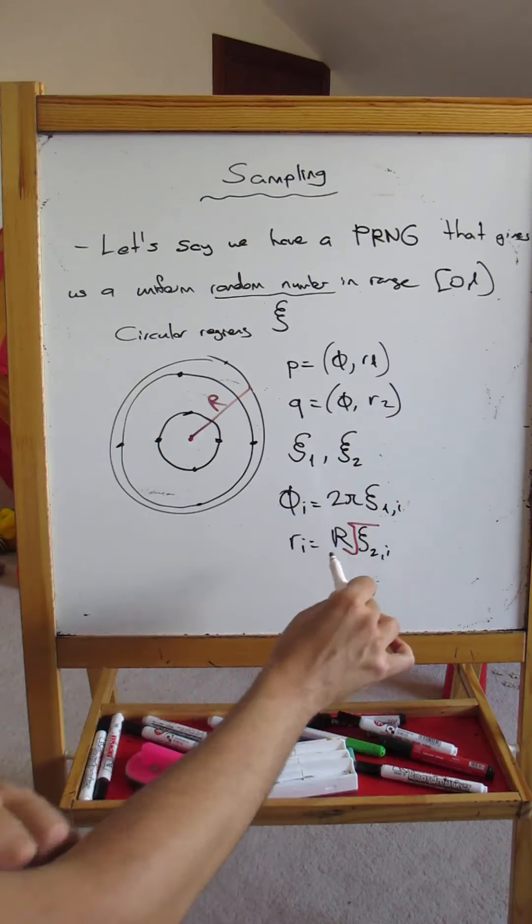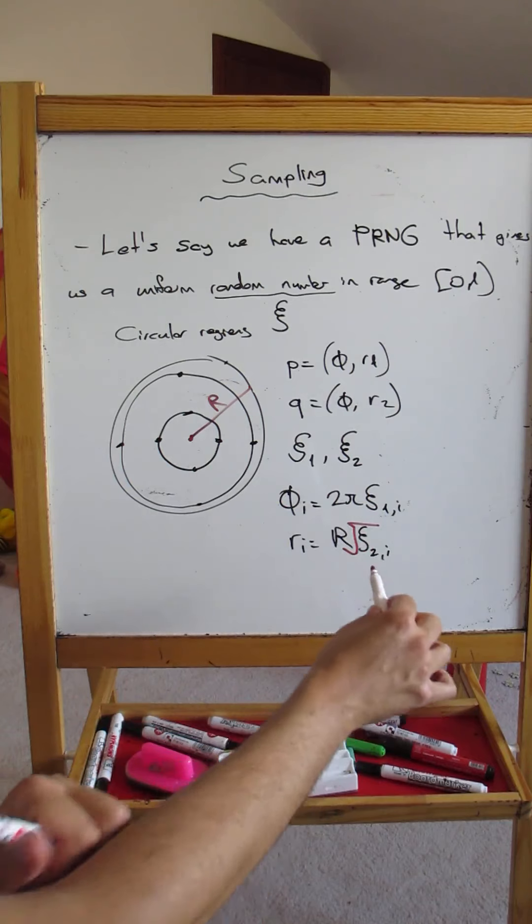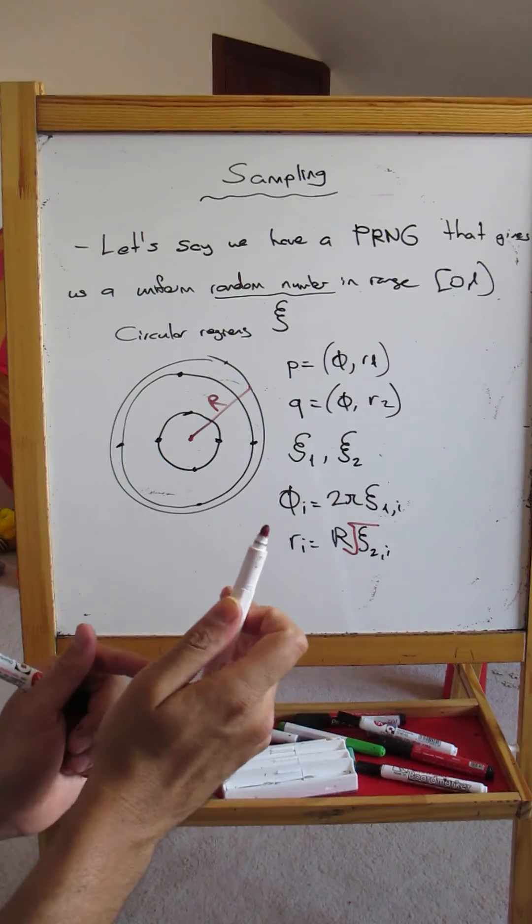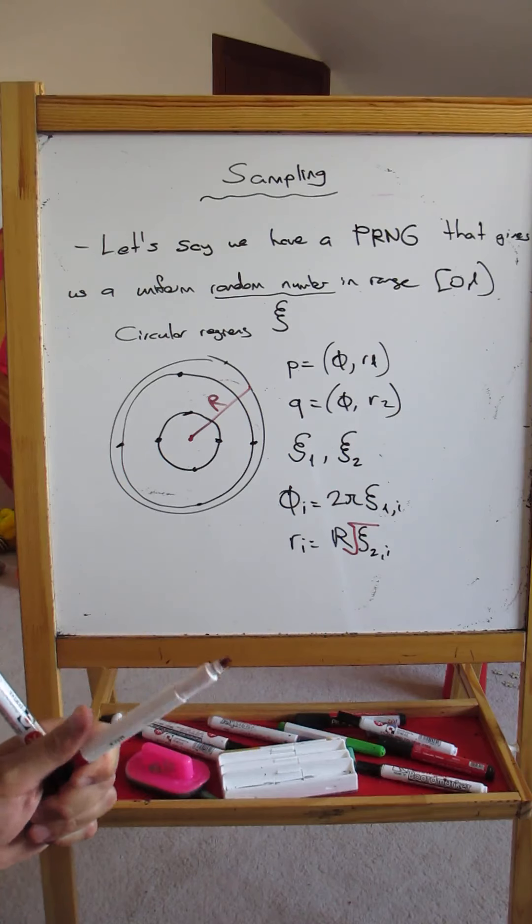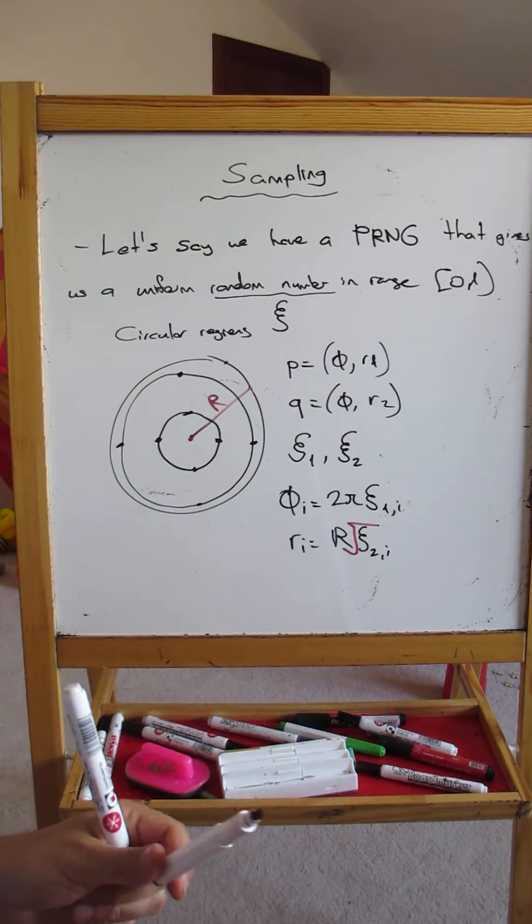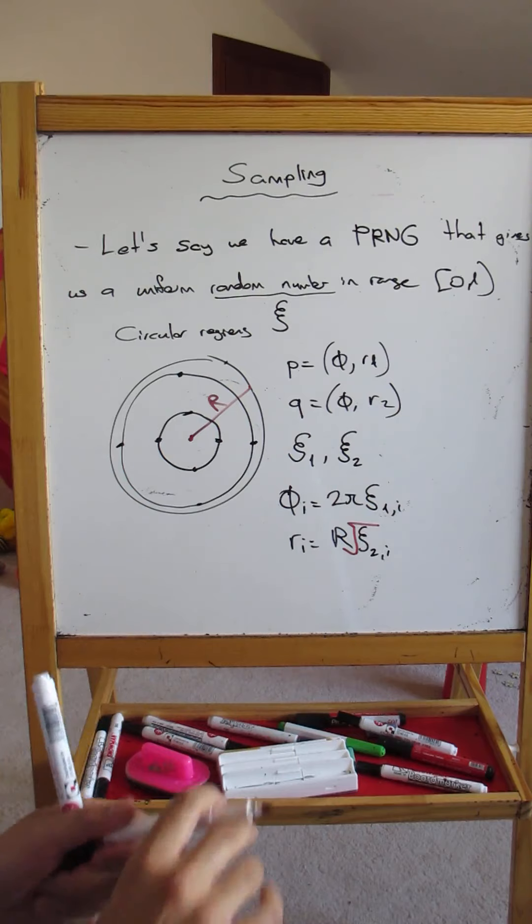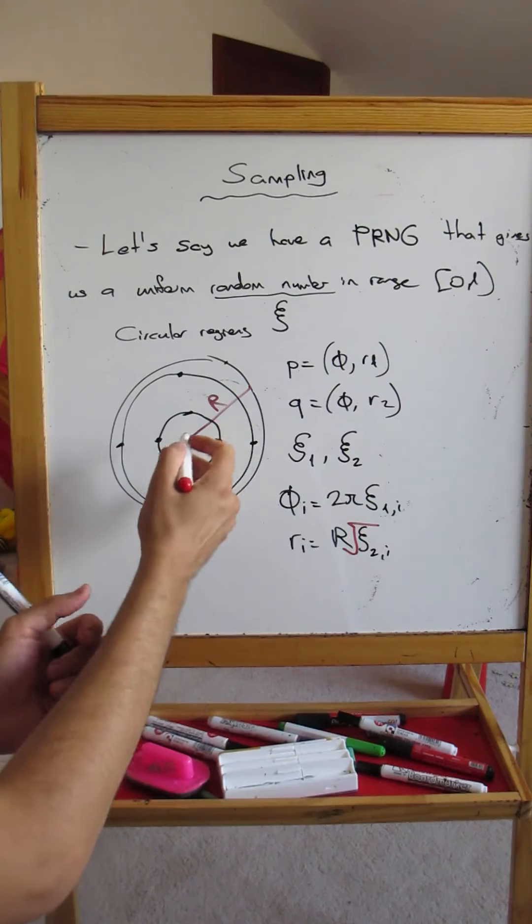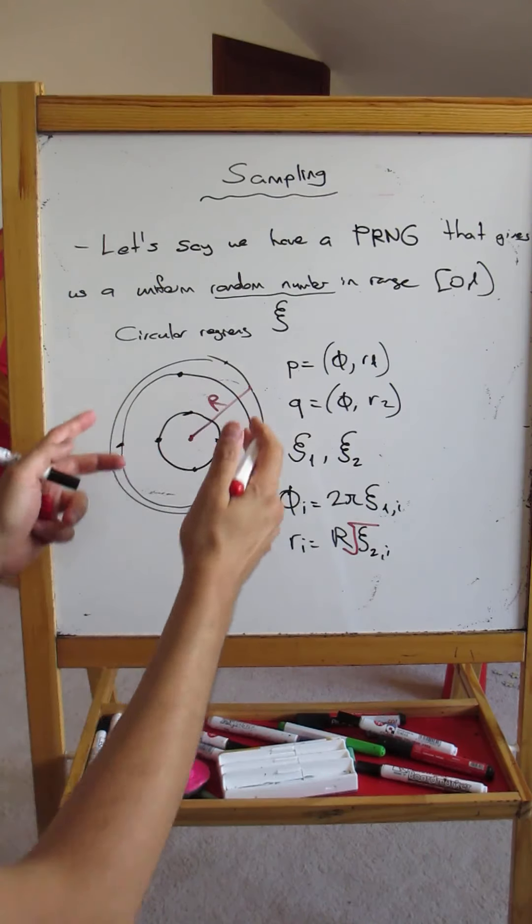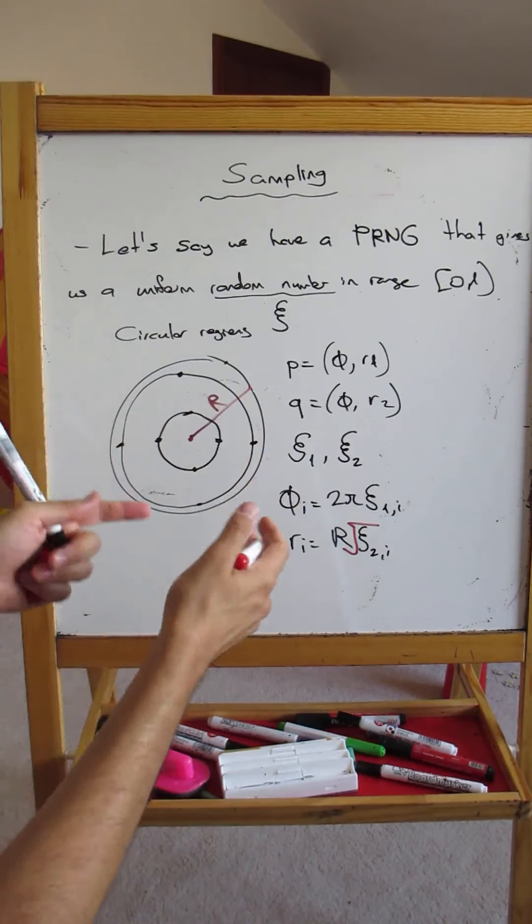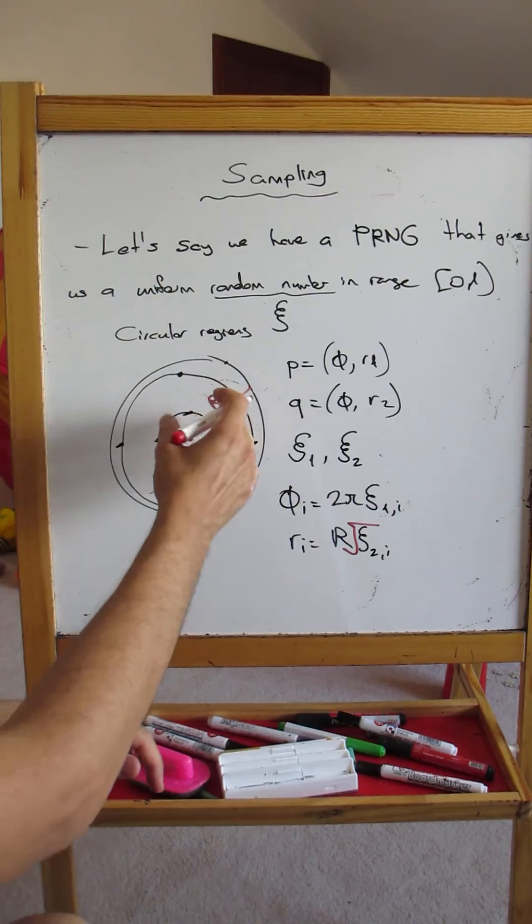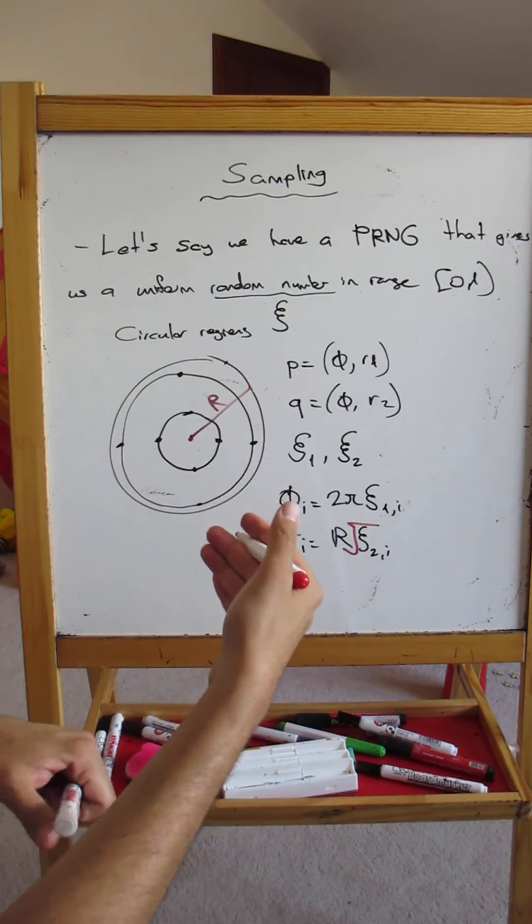If you put a square root here, note that because chi is between zero and one, when you take the square root it's going to get larger. So it's going to push samples more towards the outer regions. And the disk area also grows with respect to the square of the radius, so this balances out.